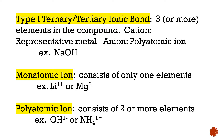So it might look something like NaOH. You can see you have three different elements here instead of the two you've been looking at the last few days. A monatomic ion consists of only one element — for example, lithium with a 1+ charge or magnesium with a 2+ charge. Whereas a polyatomic ion consists of two or more elements, all together with a charge.